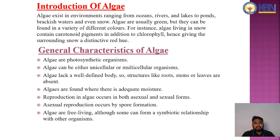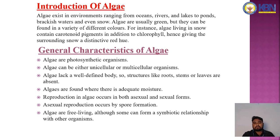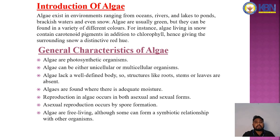Algae exist in environments ranging from oceans, rivers, and lakes to ponds, freshwaters, and even snow. Algae are usually green but can be found in a variety of different colors. For instance, algae living in snow contain carotenoid pigments in addition to chlorophyll, giving the surrounding snow a distinctive red hue.